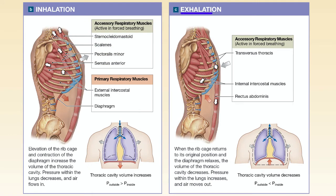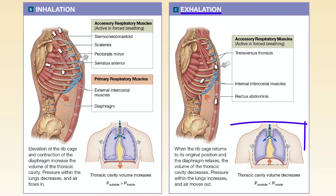When we exhale, the diaphragm and external intercostal muscles relax, and the diaphragm and ribcage return to their original positions. This lowers thoracic cavity volume and raises thoracic cavity pressure. As this pressure rises, air is pushed out of the lungs.